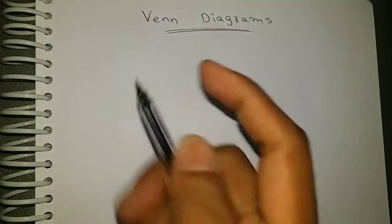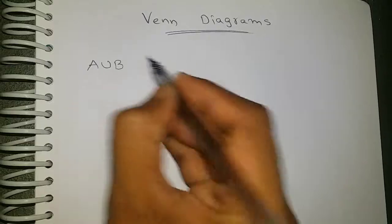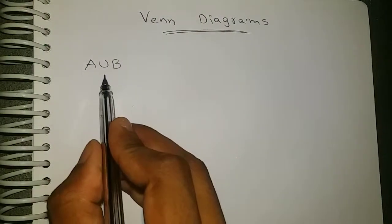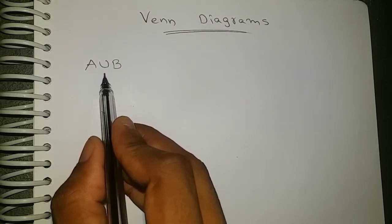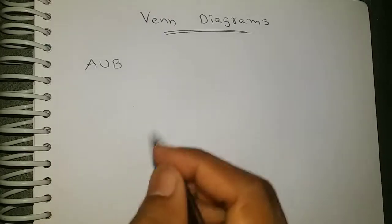So first let us go through how to draw a Venn diagram for A union B. Already we know that union is nothing but the combination or together of these two sets.